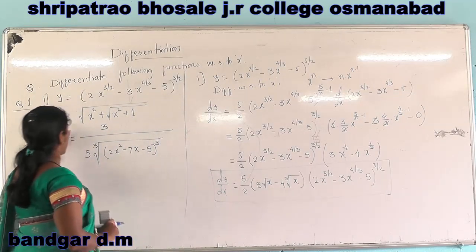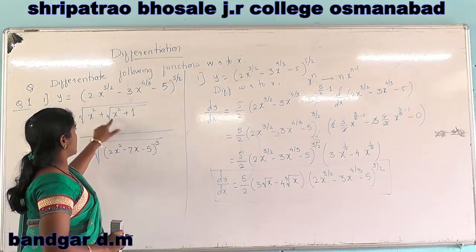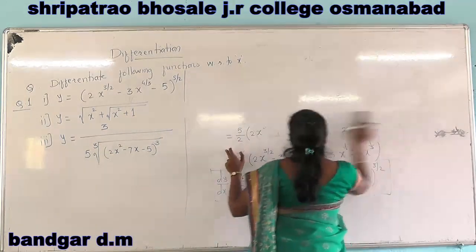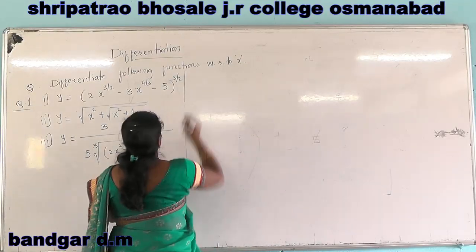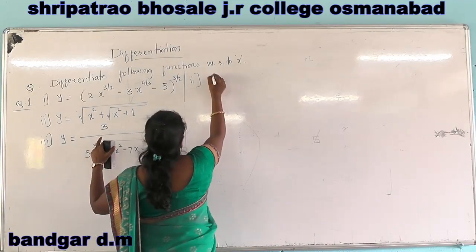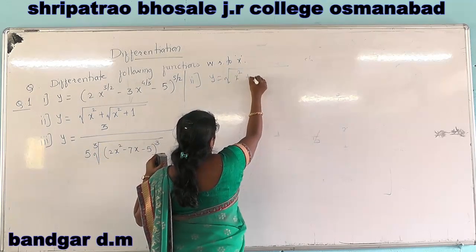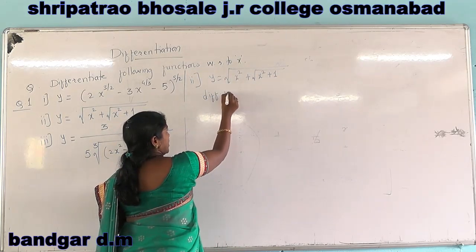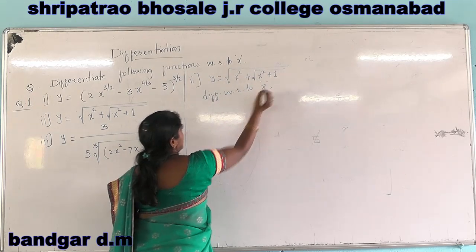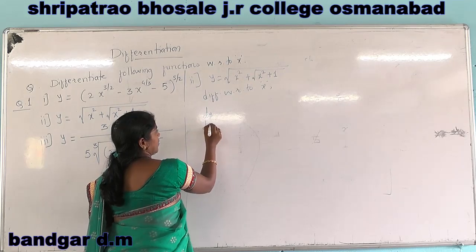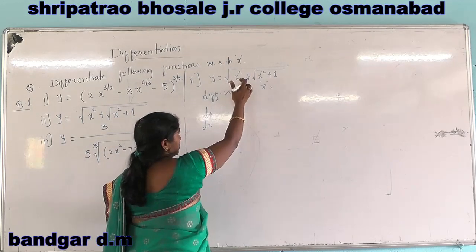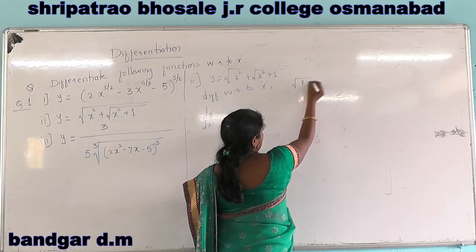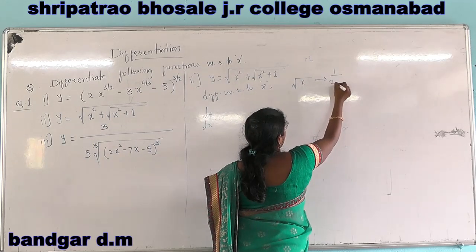Our second question: y is equal to under root of x squared plus under root of x squared plus 1. Differentiating with respect to x, we get dy by dx. The derivative of root f of x is of the form where derivative of root x is 1 by 2 root x.